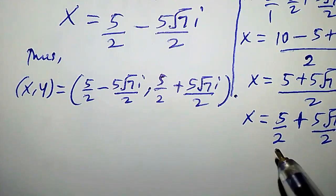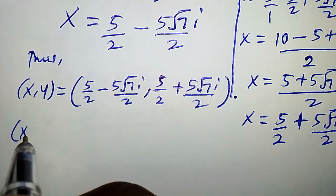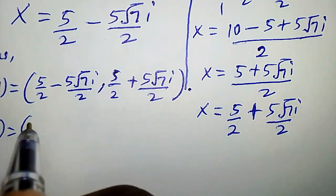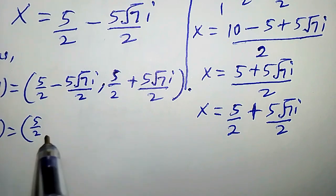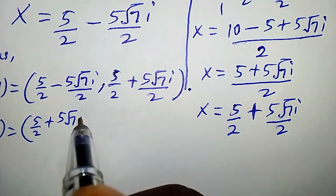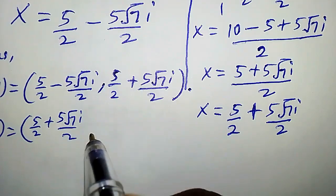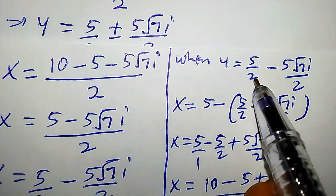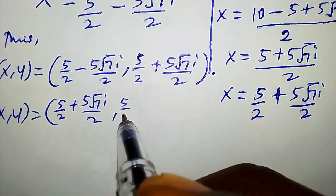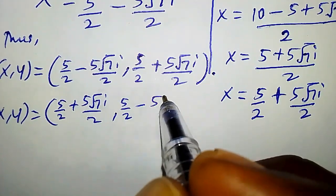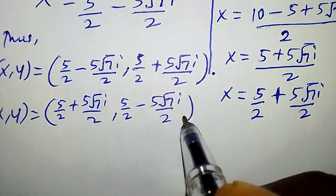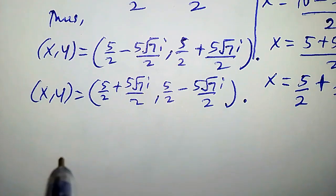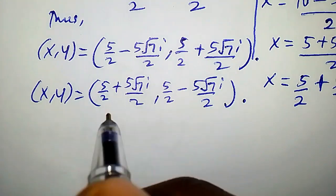Thus the second solution is (x, y) equal to: x equals 5 over 2 plus 5 root 7i over 2, and y equals 5 over 2 minus 5 root 7i over 2. These are the two solutions required. But let us verify if these solutions are indeed correct.